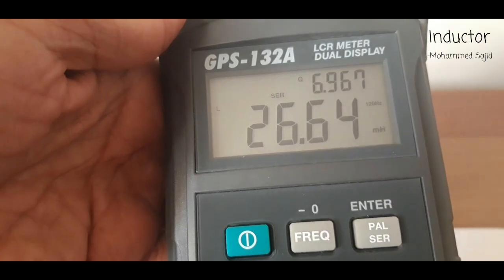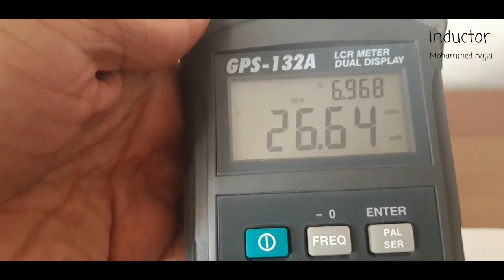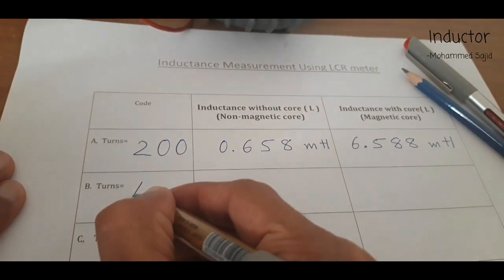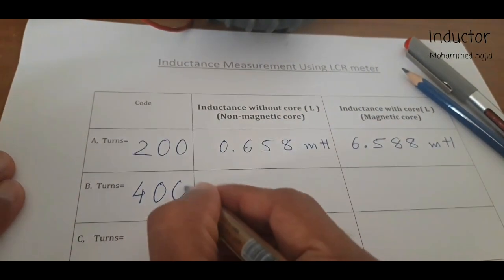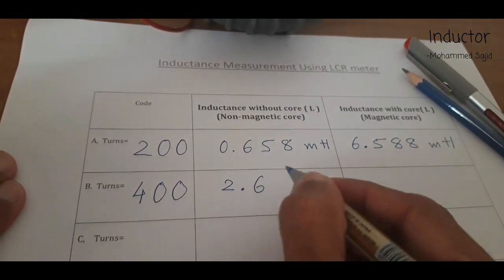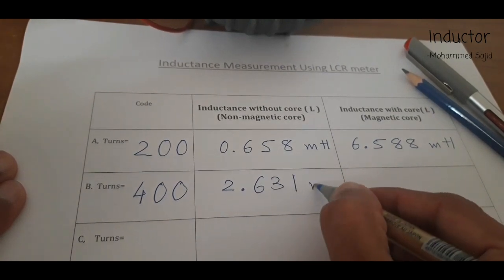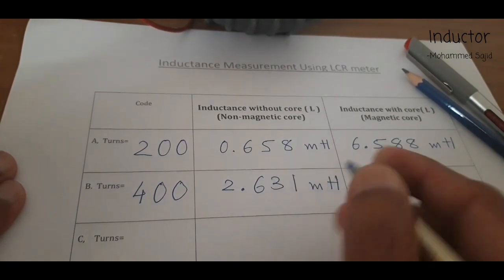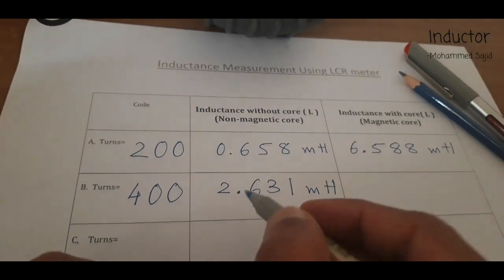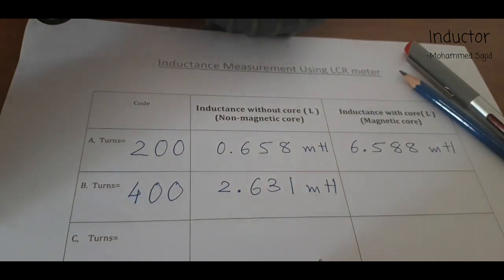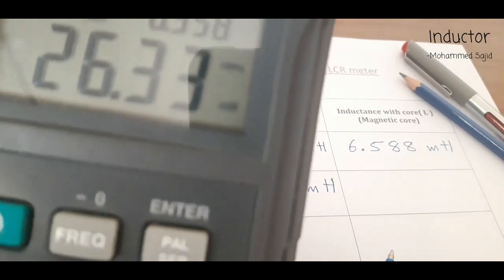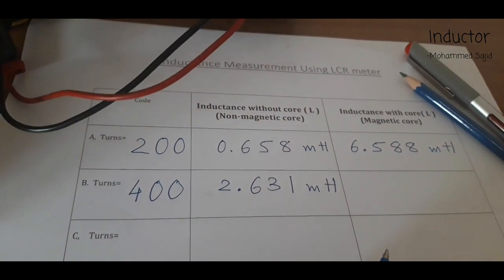After pressing the range button, the reading is now 26.64 mH. Previously without core it was 2.631 mH, and now with core it is 26.33 mH. We will write this reading in our observation table.